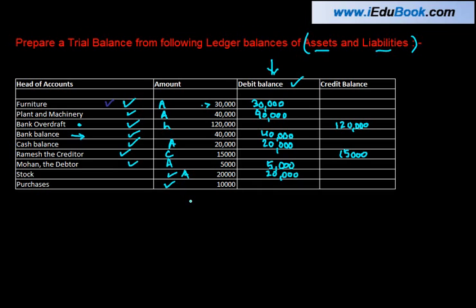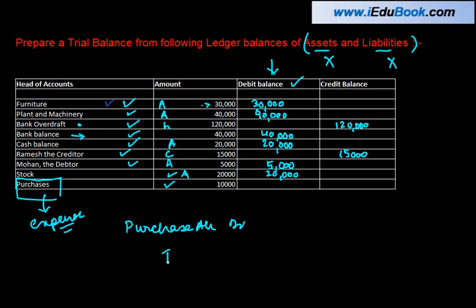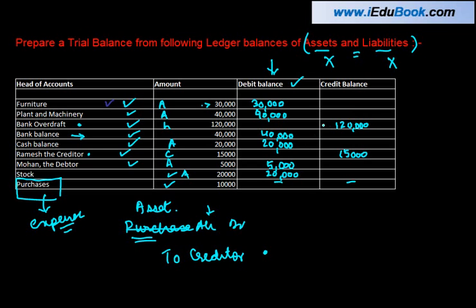Purchases — a purchase is an expense, not an asset and not a liability. When you purchase something, the entry is: purchase account debit to creditor. A creditor is a liability, just like Ramesh. But purchases itself is not an asset unless it was a purchase of an asset, in which case you would have debited the asset account instead. Hence, purchase will not have any treatment here because we are only looking at assets and liabilities. If you were generally preparing a trial balance, the purchase balance would be written on the debit side.